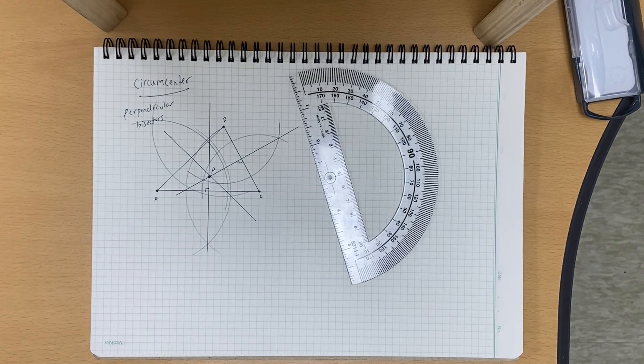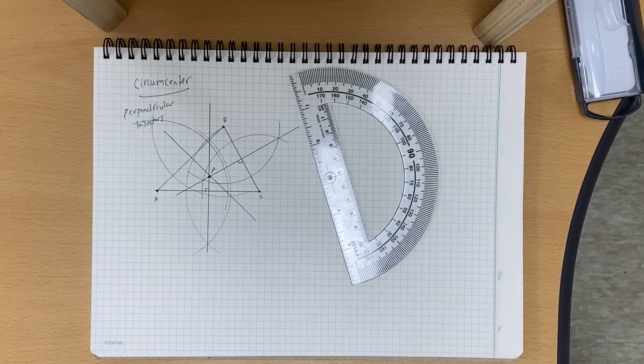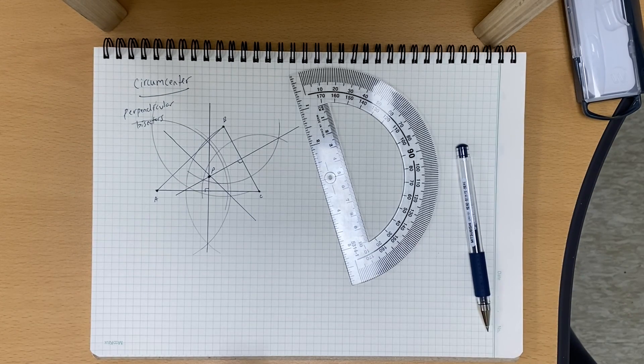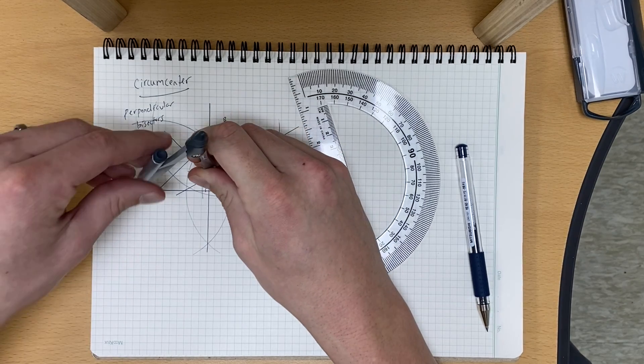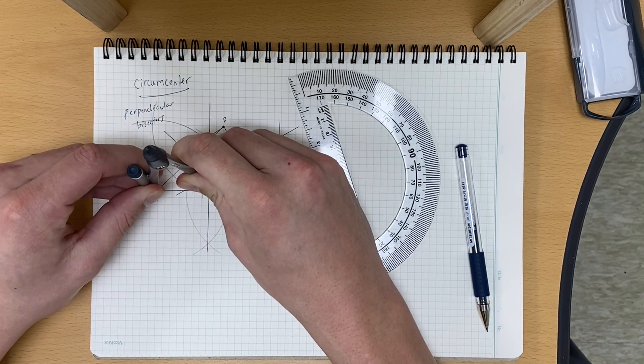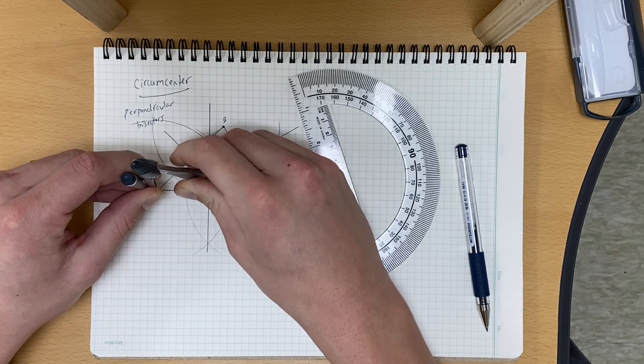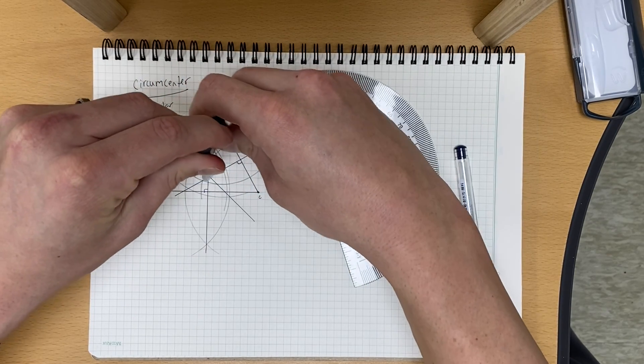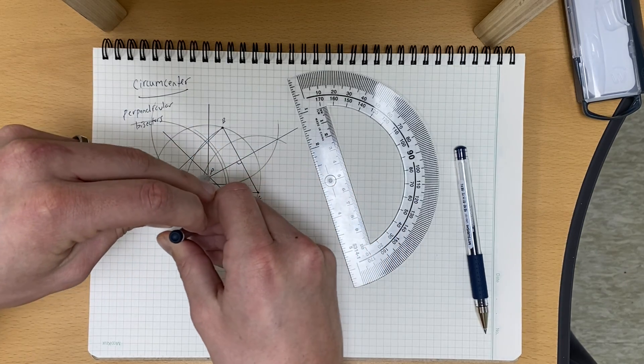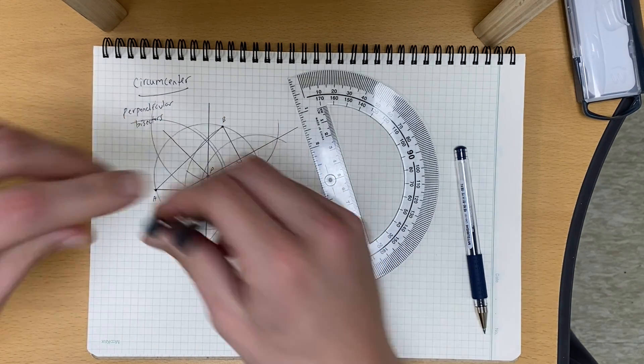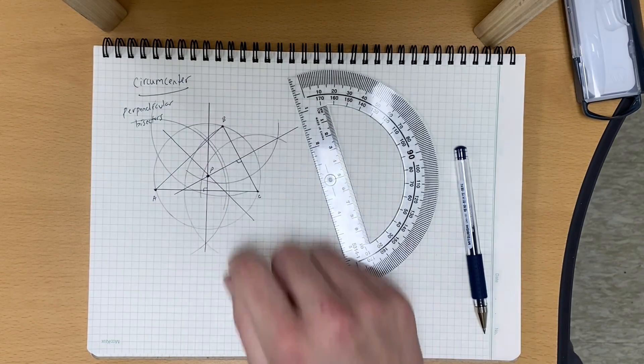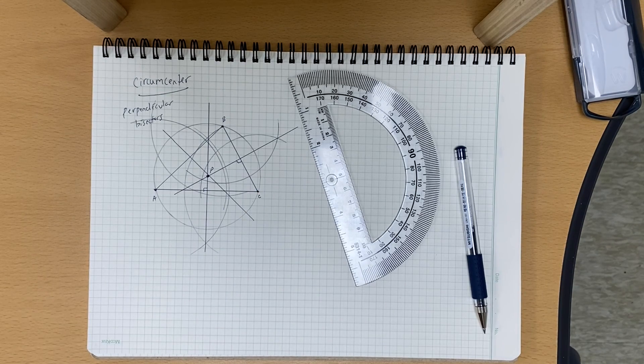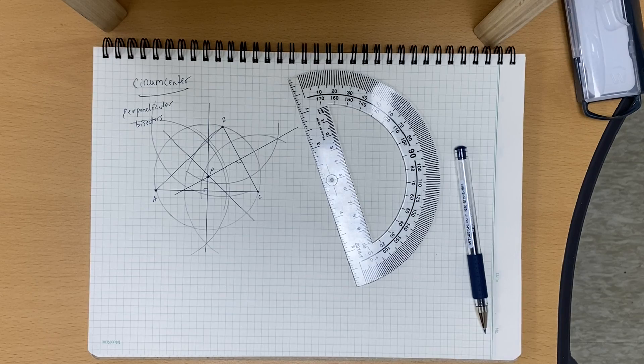So now what we can do with the circumcenter, we know that the circumcenter is equidistant from the vertices. So we can take our compass, and we can put the needle at P, and we can put the other end of the compass at one of the vertices, and this will allow us to circumscribe, which means draw around a circumcircle, which will draw around our triangle, and it will touch each vertice, because the distance is from A to P, P to B, P to C. Those would all be radii, and they all have the same distance. So this is our circumcenter and our circumcircle.